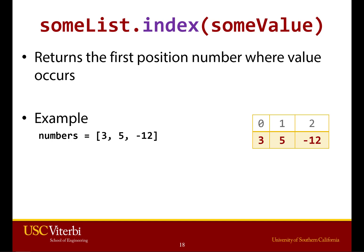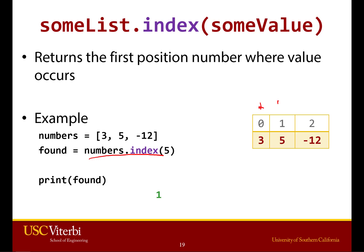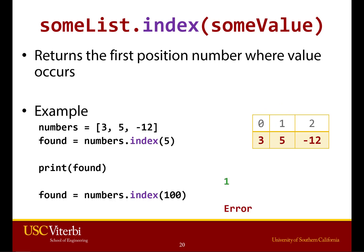Another useful method is index. What this does is essentially search the list and return the first index — the first position number — where a given value occurs. So for example, if I have 3, 5, negative 12, and I say numbers.index(5), it's going to search and return 1, because 1 is the index where the value 5 appears. You give it a value, and it tells you the index. Now, if you try to look for something that doesn't exist — for example, 100 — and there's no 100 in this list, it's going to give you an error.